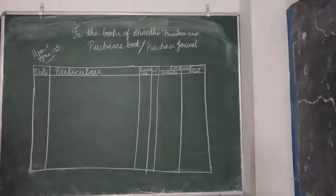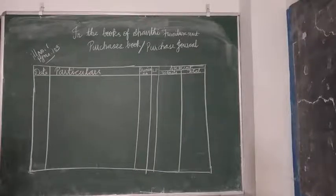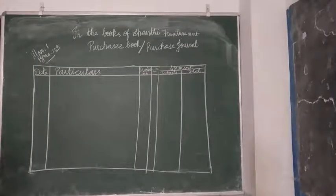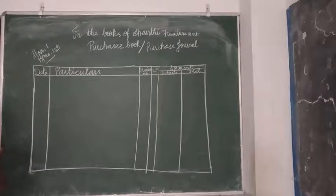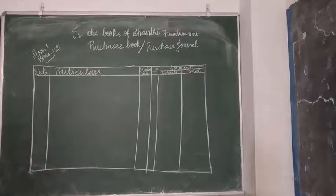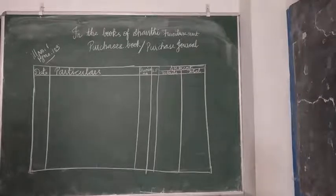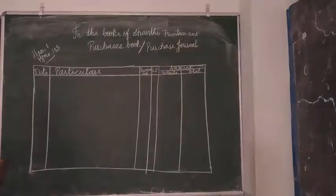Let us move on to the sum. March 1st: purchased from Mohan Furniture Mart, Madurai — 20 chairs at 450 each and two tables at 1000 each. First, go through the sum and identify which transactions to bring into the purchases book — only credit purchases. We should not include cash purchases. There is also a trade discount at 10%, which we have to reduce from the total amount.